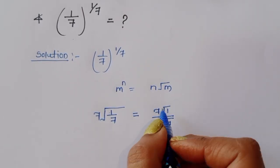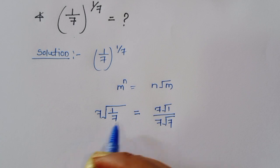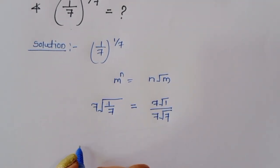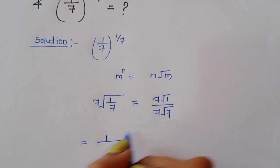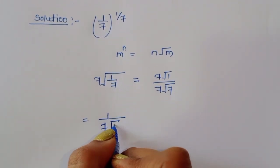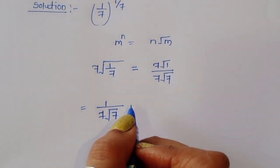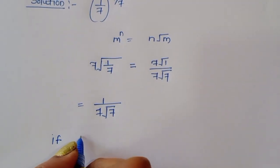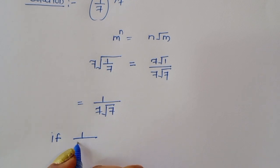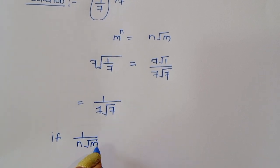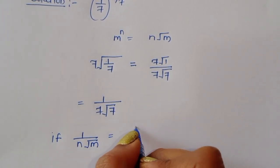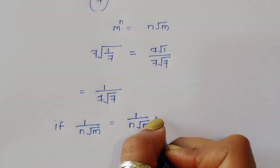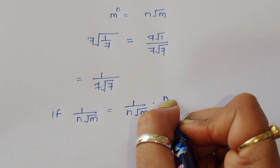The 7th root of 1 equals 1, because any root of 1 is equal to 1. So this becomes 1 divided by the 7th root of 7. Now we know that 1 divided by the nth root of m can be rationalized using a known formula.